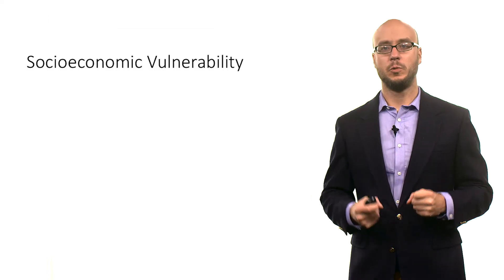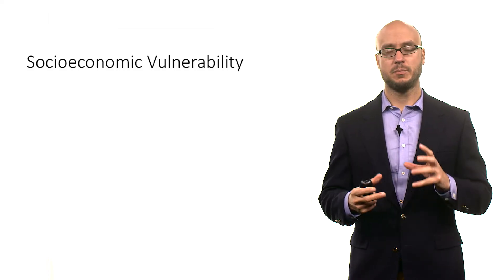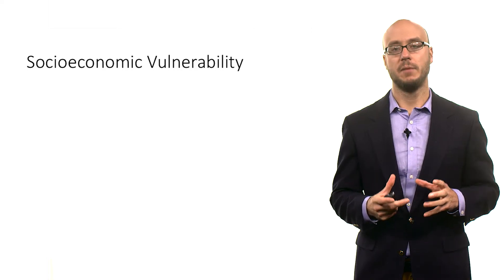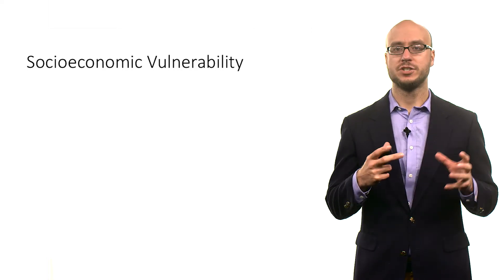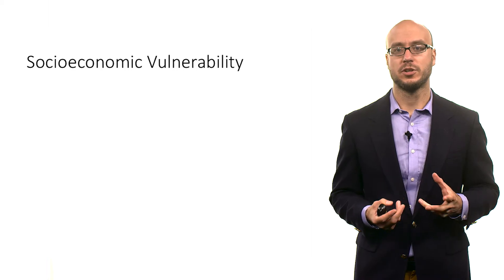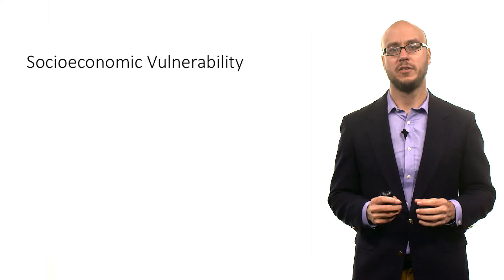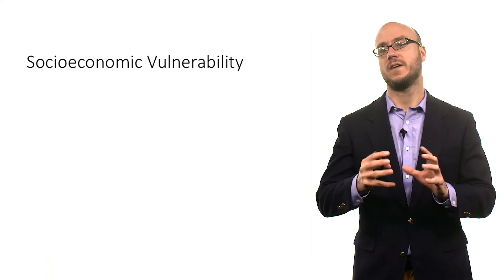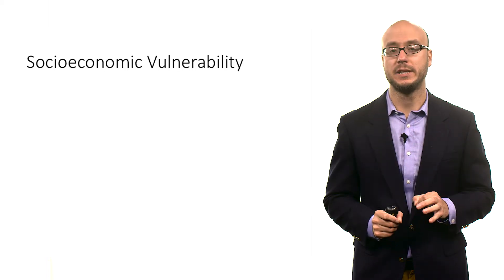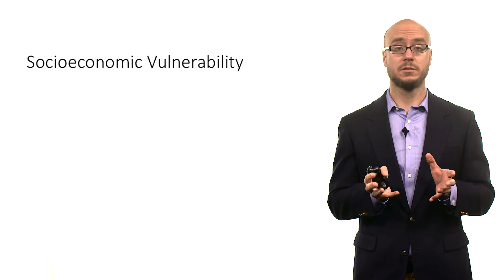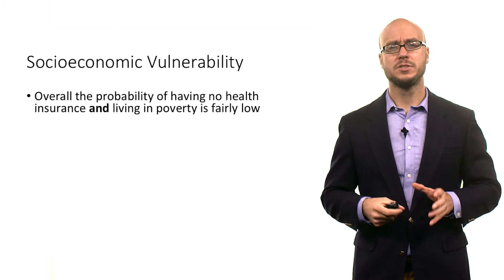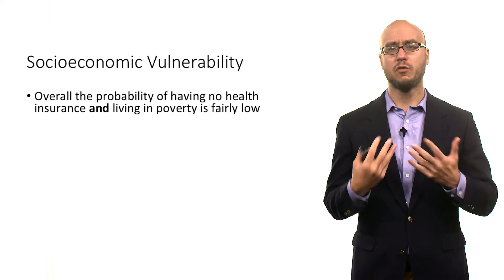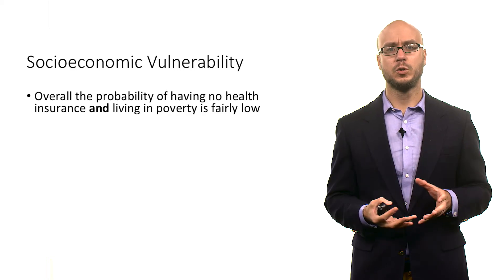In our previous example, we calculated the probability of two events occurring at the same time. In particular, we imagined that we were a public health researcher, and we wanted to know what's the probability of being economically poor and not having health insurance. We found that joint probability is 0.09.